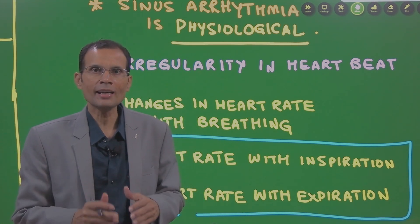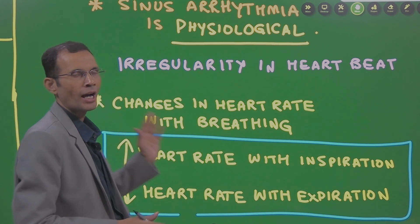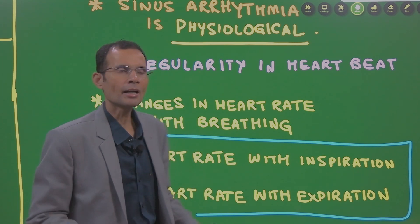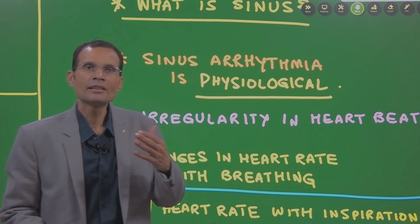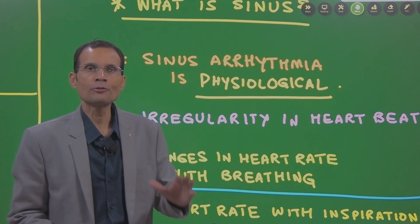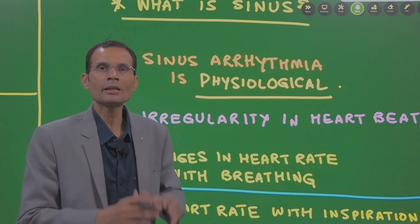Arrhythmia means irregularity in the heartbeat. Irregular heartbeats or heart rhythm is called as arrhythmia and sinus means heart is still under the control of SA node. It is the SA node which is discharging the impulses.